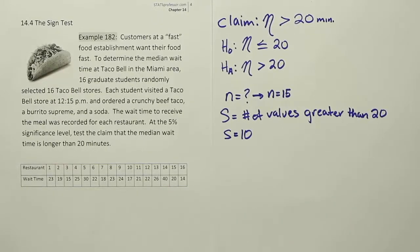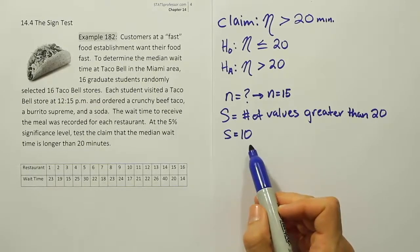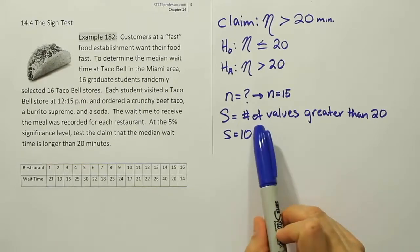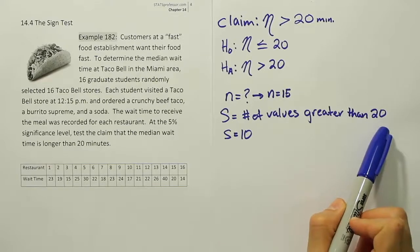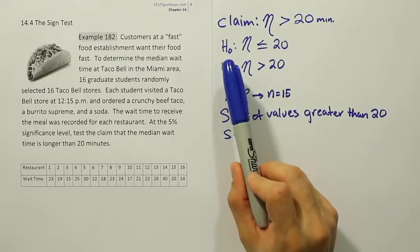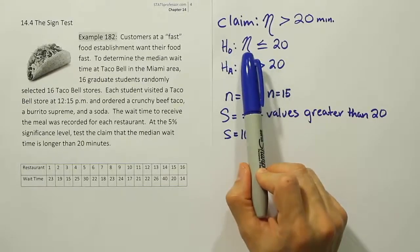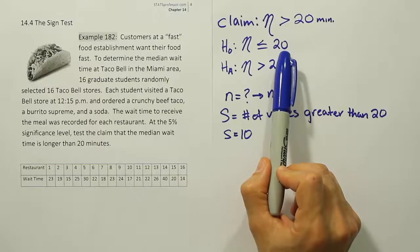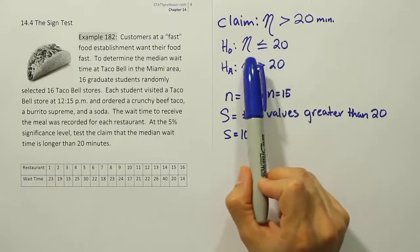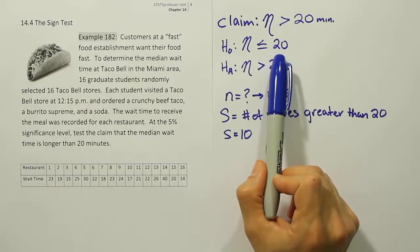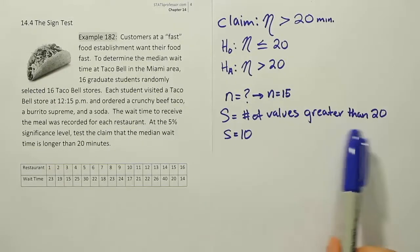The only thing left is to decide whether to reject the null hypothesis. We're going to use the p-value approach. To use it, we need to understand the distribution. This variable has a binomial distribution where the probability of success is 50%. S counts the number of values greater than 20. If we assume H0 is true — that the median actually equals 20 — then the probability a value is greater than 20 is 50%, since the median is the 50th percentile and half the values are above it.